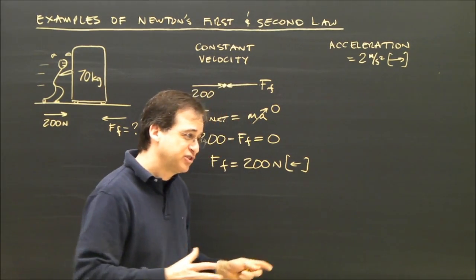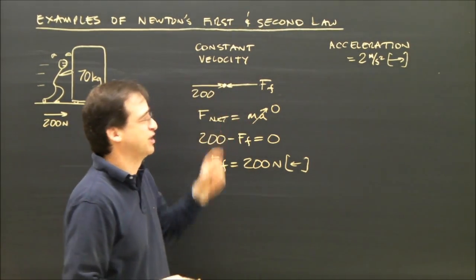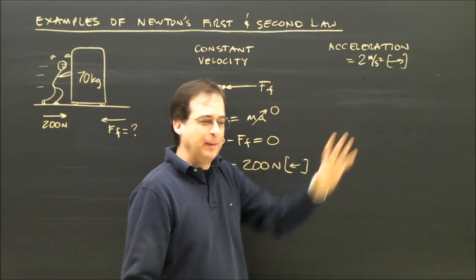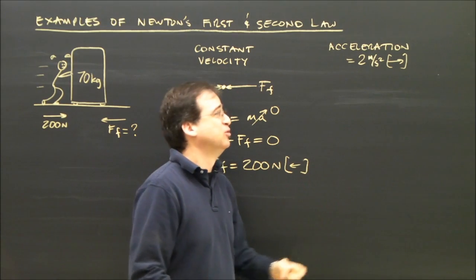So I need more force to start it moving and then all I have to do is balance the force to keep it moving. Okay, now I want the fridge to accelerate at 2 meters per second squared because at the beginning I want to push a little harder to get it moving.